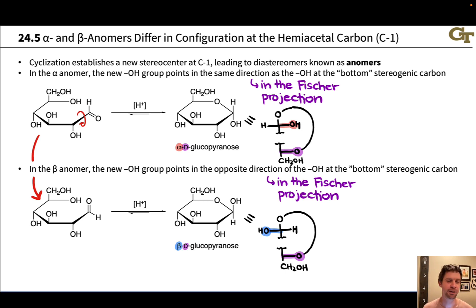People on YouTube are going to try to sell you this one simple trick to draw alpha and beta anomers. And it's not all nonsense, but it's mostly nonsense. This is the convention, very specifically this. The bottom stereogenic carbon is the reference carbon for alpha and beta, even if it's not the cyclizing stereocenter.